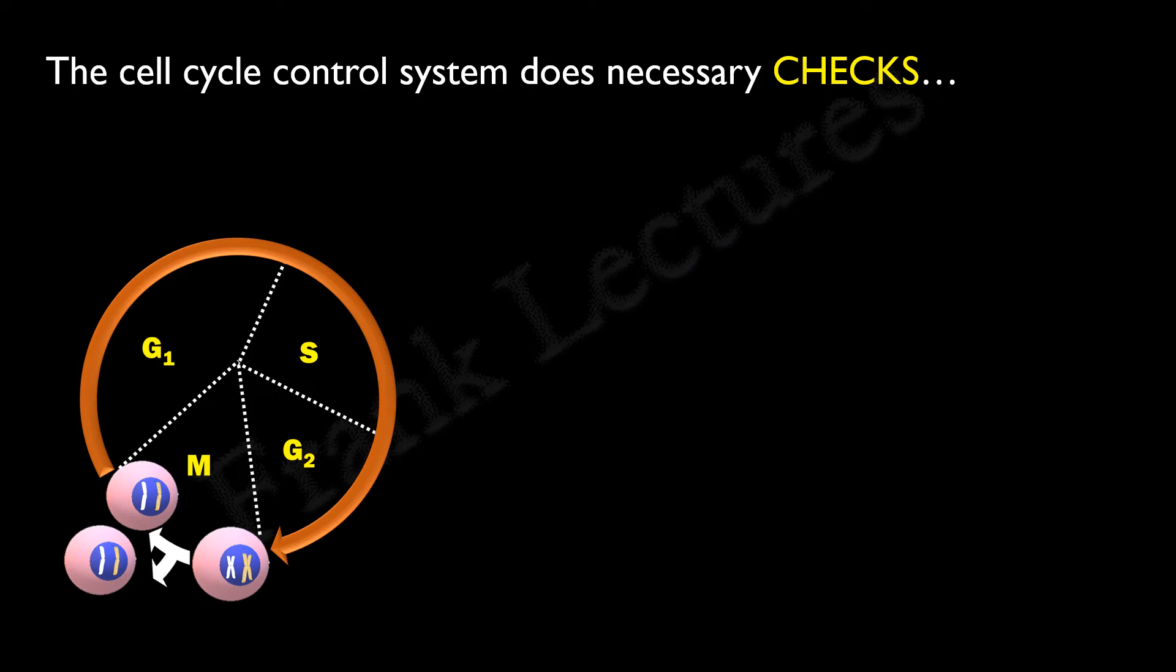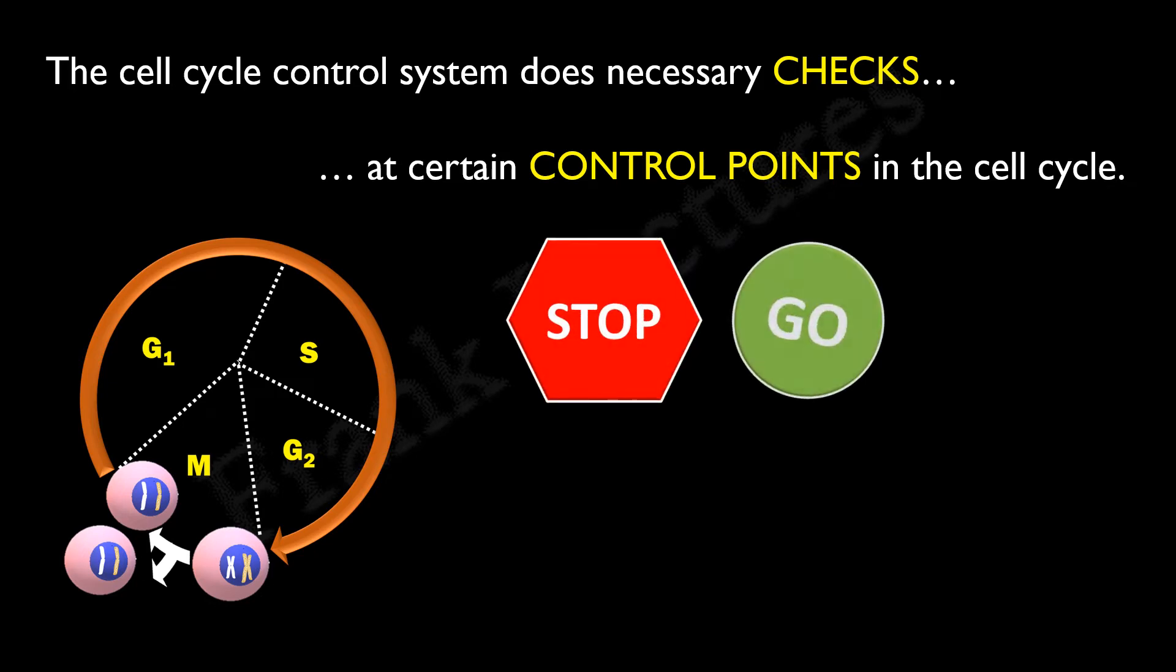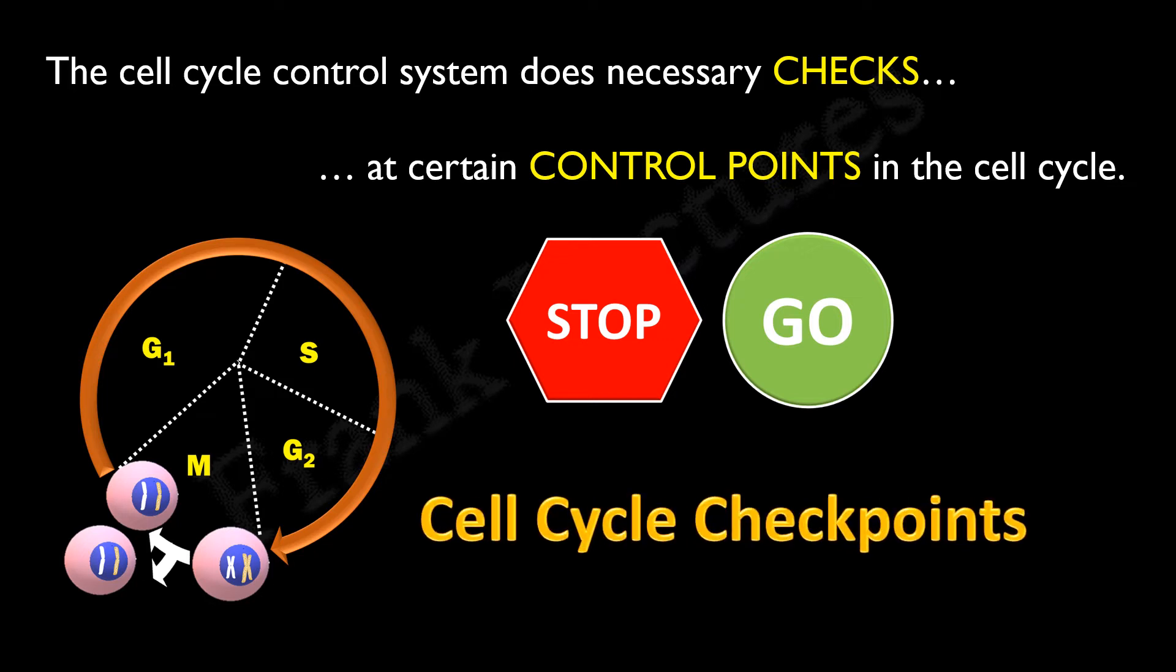Therefore, the cell cycle control system does necessary checks at certain control points in the cell cycle to make sure that cell has completed each phase correctly before moving to the next phase. At these control points, it is decided whether to stop or go ahead. These control points in the cell cycle are known as the cell cycle checkpoints.